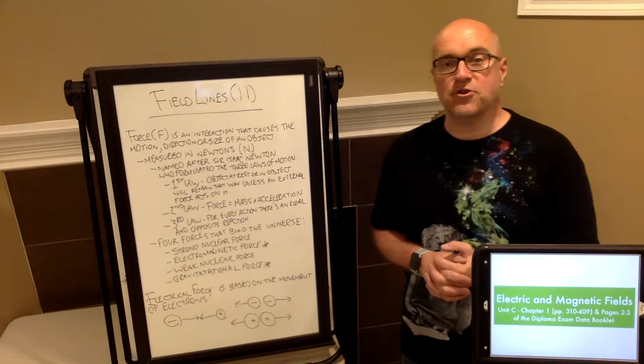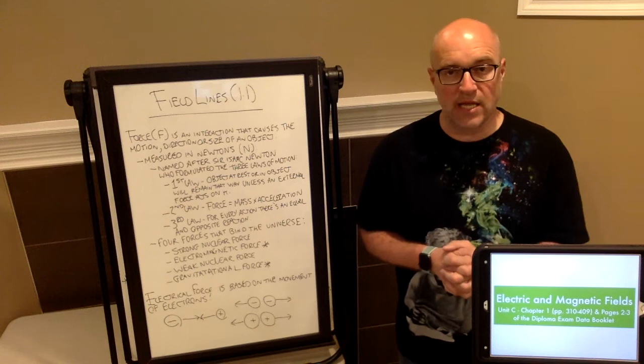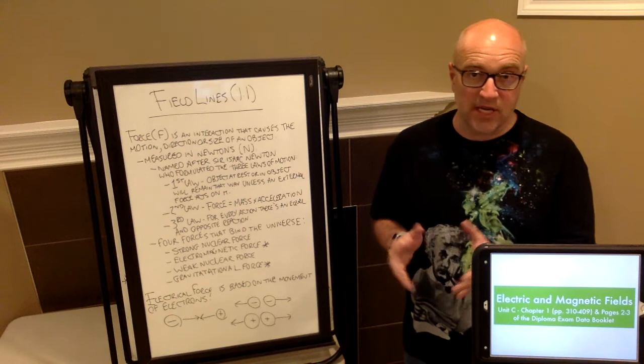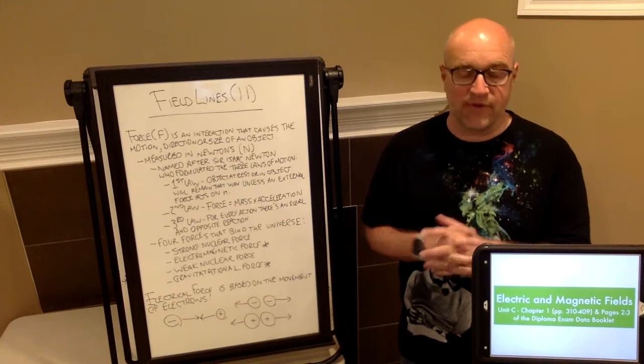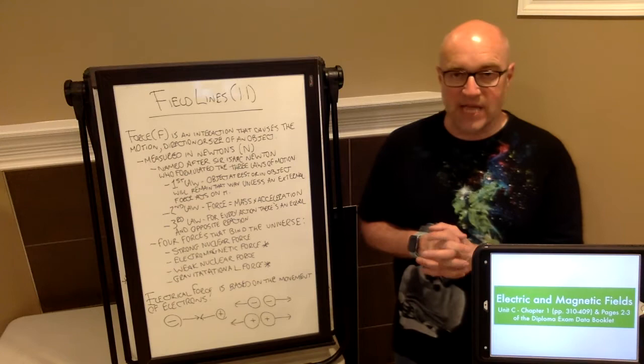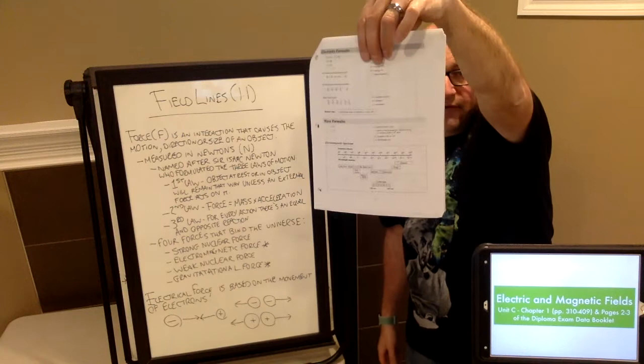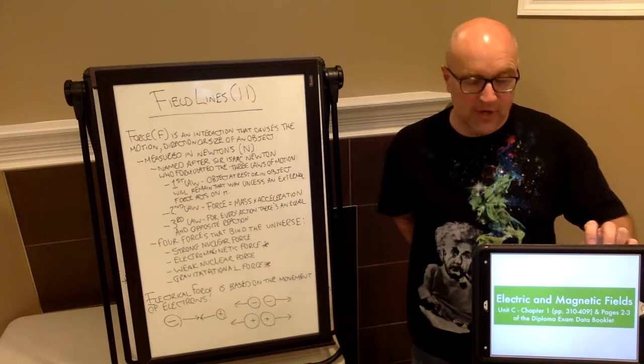Welcome to Science 30 and our first discussion about electromagnetic energy, Unit C. We're going to be discussing field lines today. You should be referring to Unit C, Chapter 1, which covers electric and magnetic fields — the first half of the unit — on pages 310 to 409 of the textbook. You should also be accessing pages 2 and 3 of your Science 30 data booklet for this section.